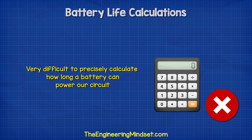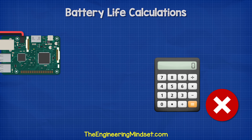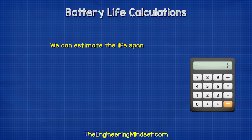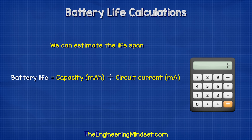There's no real way to precisely calculate the lifespan — the best way is to simply test it. We can, however, make an estimate of the lifespan with the following formula: battery life equals the capacity in milliamp hours divided by the circuit current in milliamps.